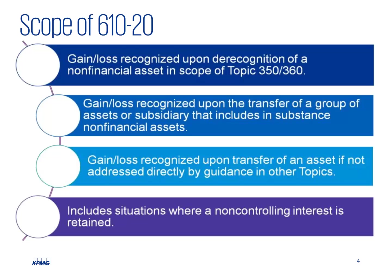It's clear that a non-financial asset or group of non-financial assets that includes an in-substance non-financial asset would be in scope. Thinking about the interplay with the definition of a business, some transactions that seem to be a transfer of a group or a subsidiary that includes in-substance non-financial assets, particularly those in the real estate industry, may also meet the definition of a business. Today, those disposals are accounted for in the real estate derecognition guidance in Subtopic 360-20 rather than Topic 810 as a business. Is that still what would happen here?